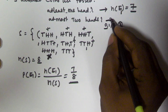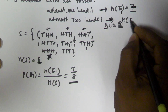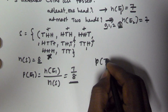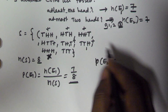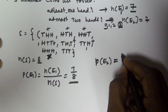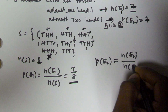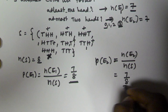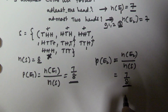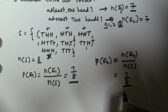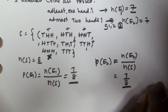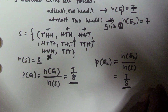So except that one, remaining all are favorable cases. The cardinality of the second event — at most two heads — is also 7. So the probability of E2 is n(E2) by n(S), that is 7 by 8. So the probability of getting at most two heads when throwing three unbiased coins is 7/8. Thank you very much for watching this video, please subscribe to my channel.